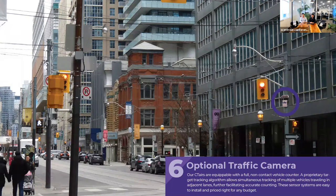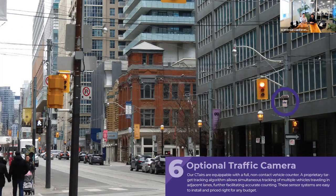Another feature of this device is the optional traffic camera that can be mounted on the unit. You can see it mounted in an urban setting with a view of traffic and pedestrians. This is a non-contact vehicle counter — usually vehicle counting requires a wire run across the street, but this is purely vision-based. Our algorithm distinguishes between different vehicle classes: cars, trucks, bicycles, motorcycles, and pedestrians. All this information is reported on the cloud service in different bins, so you can tell exactly how many trucks or pedestrians passed by and correlate that with your chemical data.